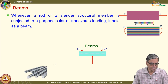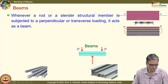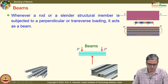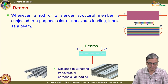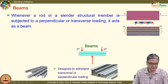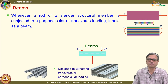You can also have rods — when you have rods, you apply the load along the axis. The moment you say beams, you come across the use of such cross sections very often. You have the I-beam because it is very effective and utilizes less amount of material. These are designed to withstand transverse or perpendicular loading.